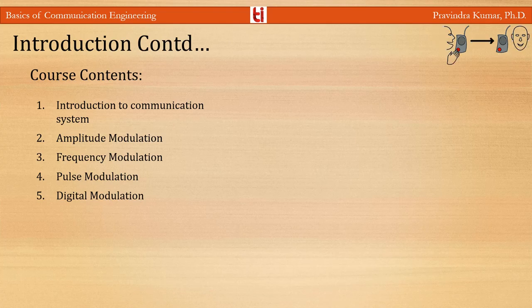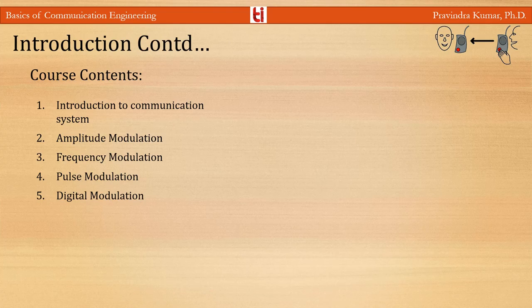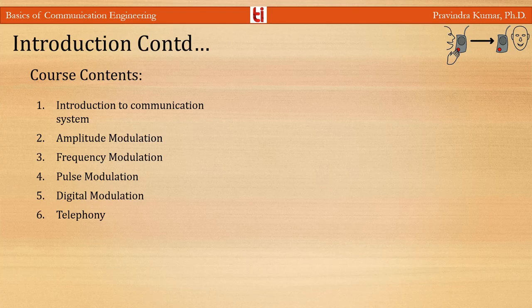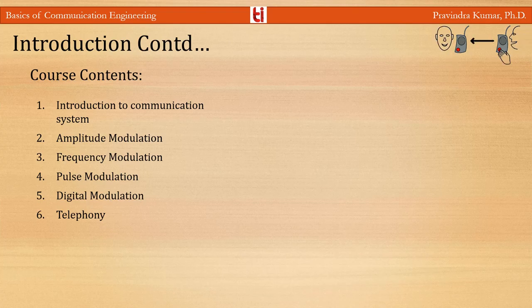In the fifth unit, digital modulation, I will discuss line coding, different line coding techniques, amplitude shift keying, frequency shift keying, phase shift keying, quadrature amplitude modulation, constellation diagrams, and generation and reception of binary phase shift keying. In the last unit, telephony, we will discuss the principles of telephony, telephone transmitter and receiver, and the necessity for the telephone exchange.